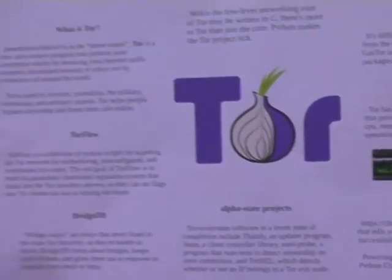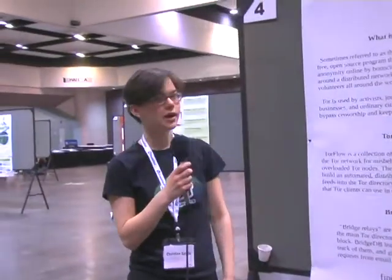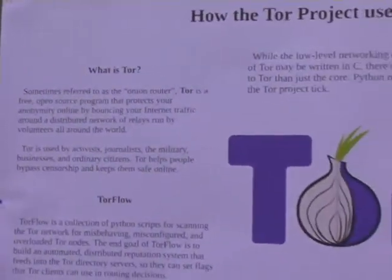Tor is a piece of software that makes you anonymous online, and it's used by lots of different groups — particularly activists. People in Syria when the uprisings were happening used Tor to keep themselves safe online. It's also used by the military and people in the US — anyone that wants to make their traffic anonymous. You might think Tor has very complicated low-level networking code, which is written in C, but there are lots of other parts of the Tor project that use Python, and I wanted to introduce some of those projects because you too could help the Tor project using your knowledge of Python.